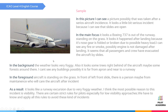In the background, the weather looks very foggy. It looks like there are some trees right behind the aircraft, maybe some forest around there. I can't see any buildings; possibly it is far from the apron and near to the runway. In the foreground, the aircraft is standing on the grass. In front of the left front slide, there is a person — maybe from maintenance — who will take care of the aircraft after the incident.